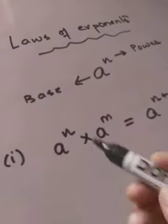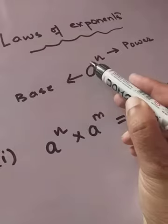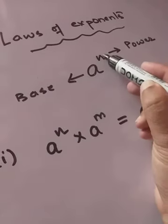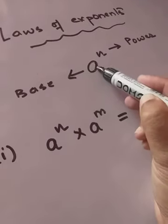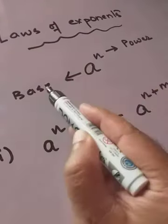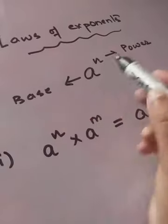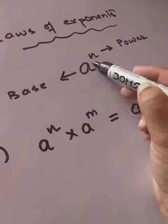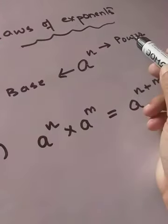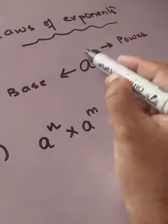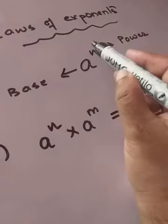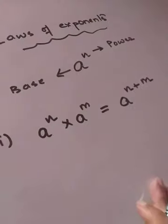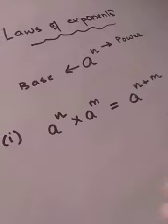Now, as we know, we say 'a to the power n.' Here, 'a' is called the base and 'n' is called the power. This is the basic idea you need to have before you understand all the laws of exponents.